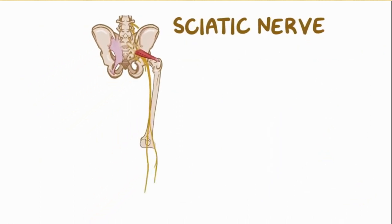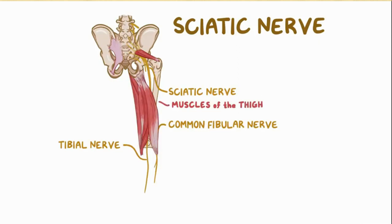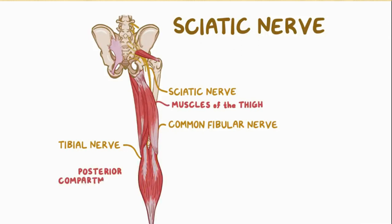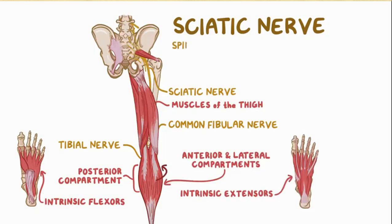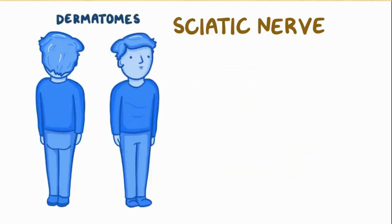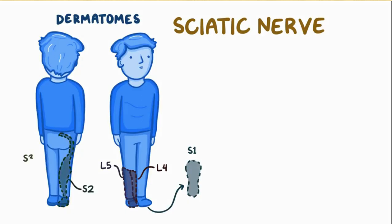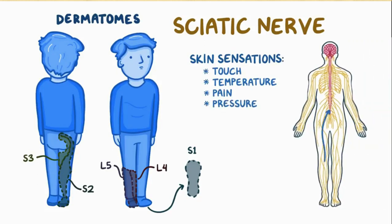The sciatic nerve travels down the back of the thigh to the back of the knee, where it splits into the tibial and common fibular nerves. The sciatic nerve innervates the muscles in the back of the thigh; the tibial nerve innervates the muscles of the posterior compartment of the leg and intrinsic flexors of the foot; the common fibular nerve controls muscles in the anterior and lateral compartments of the leg and intrinsic extensors of the foot. Each spinal nerve is responsible for sensation of a specific skin area called a dermatome: L4 covers the medial side of the leg, L5 covers the lateral side, S1 covers part of the dorsum and the entire sole of the foot, S2 covers the back of the leg, and S3 covers the back of the thigh.